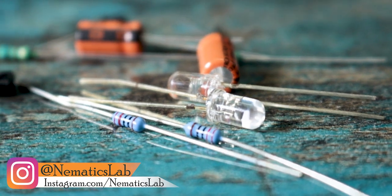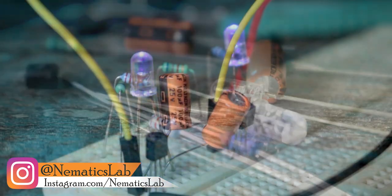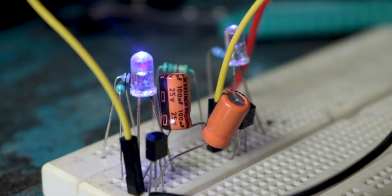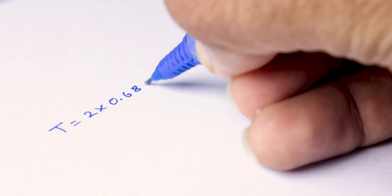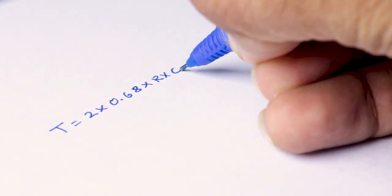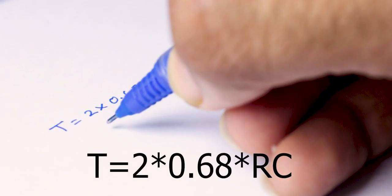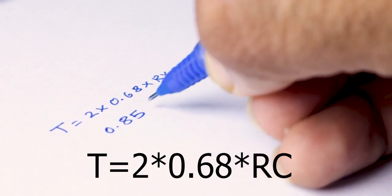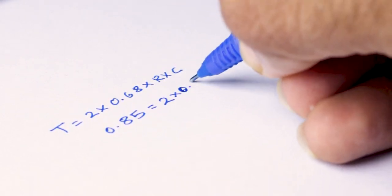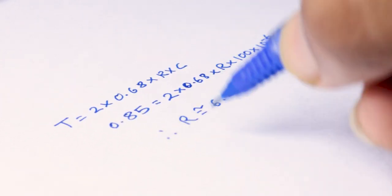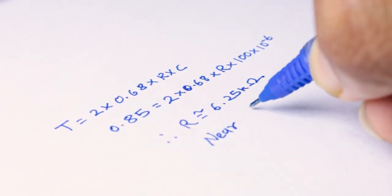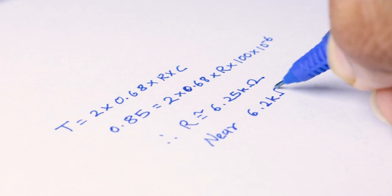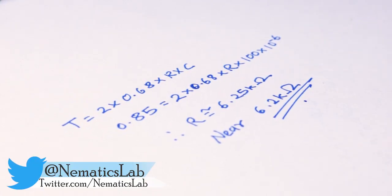Anyways, this circuit basically uses two transistors to toggle the LEDs alternatively using some capacitors and resistors. You can adjust the time delay between the toggles using this formula. I chose a relatively small time of 0.85 seconds and using the capacitor value as 100 microfarad, I got a resistance value of 6.25 kilo ohm which I then rounded off to 6.2 kilo ohm because that was the nearest value available.